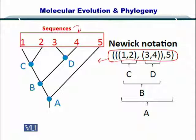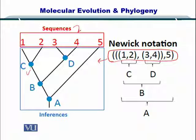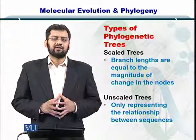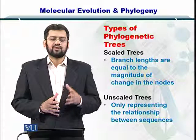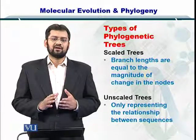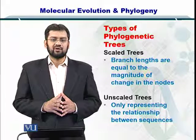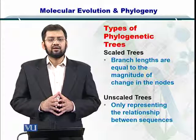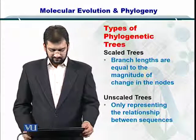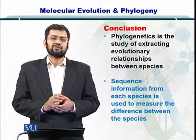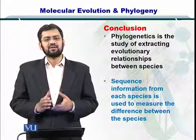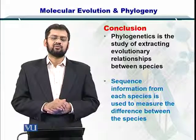The sequences are placed at the top, and the internal nodes are inferred — we need to find these nodes in order to create the tree. There are basically two types of phylogenetic trees: scaled trees and unscaled trees. In scaled trees, the edges or branch length represents the difference or distance between the two sequences, while in unscaled trees that is not the case. Unscaled trees are only representative of the relationship. In conclusion, phylogenetics is the study of evolution, and by studying the differences between evolved sequences, we can represent such information by looking at phylogenetic trees and the algorithms used to construct them.